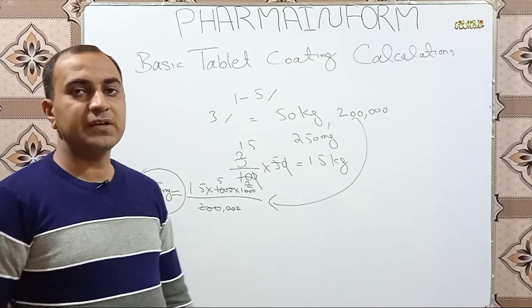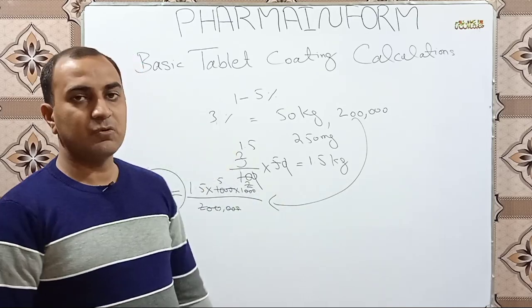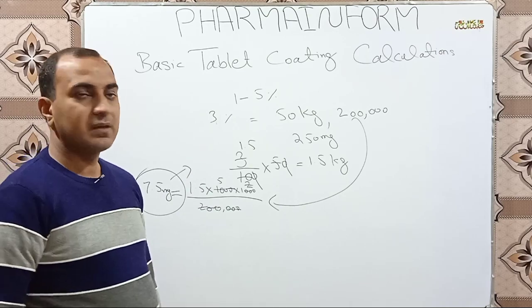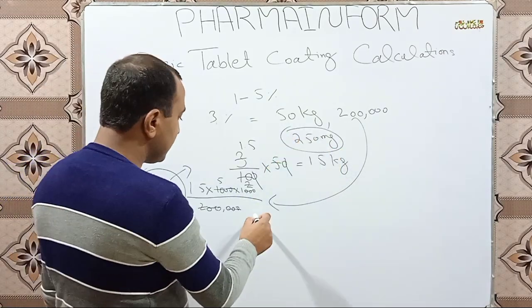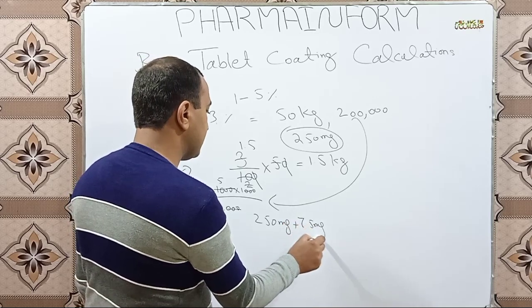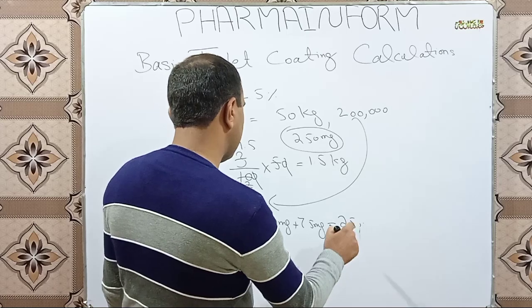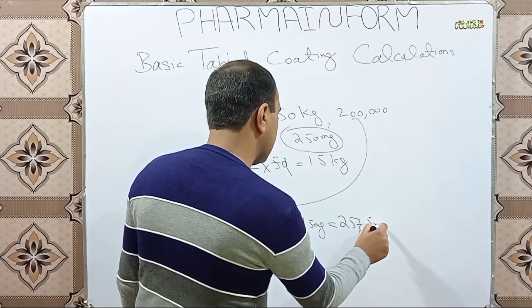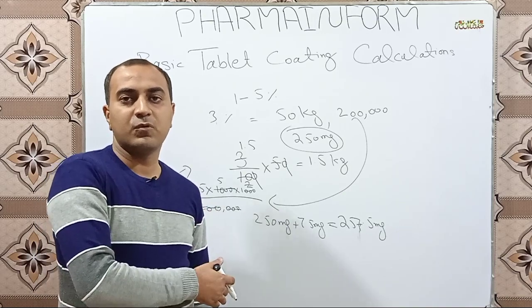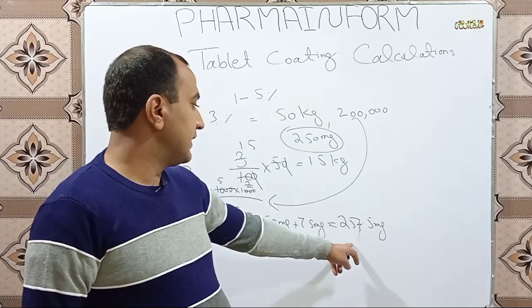So 7.5 mg weight gain must be achieved by each individual tablet if we use 3 percent coating material. The theoretical individual coated tablet weight will be the core weight plus the coating weight: 250 mg + 7.5 mg = 257.5 mg. This is a theoretical calculation — in practice, a loss is observed due to dusting.